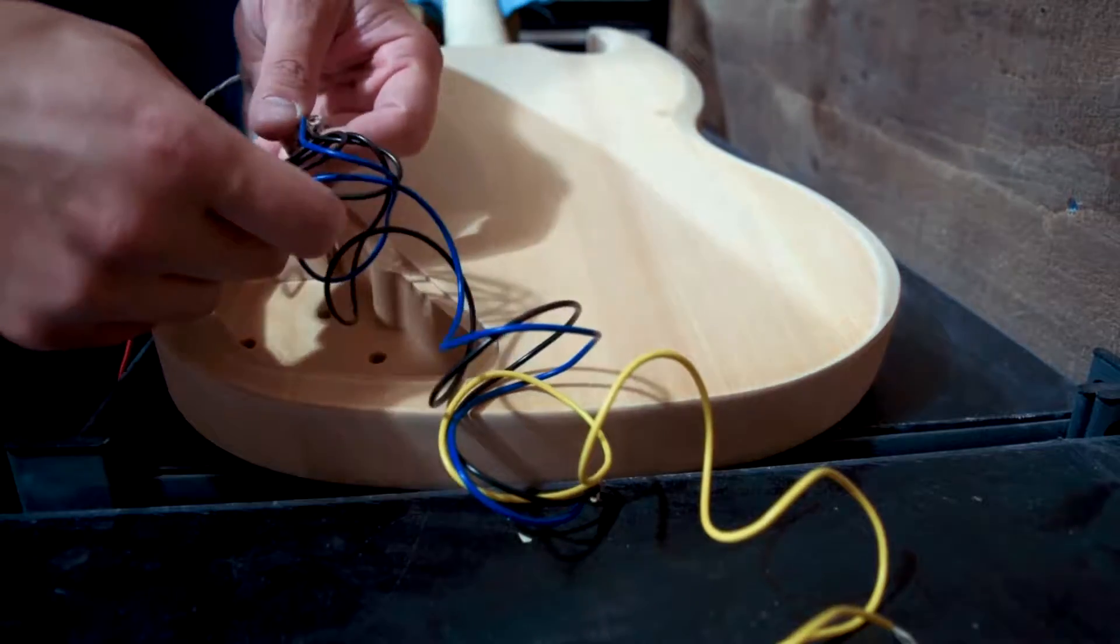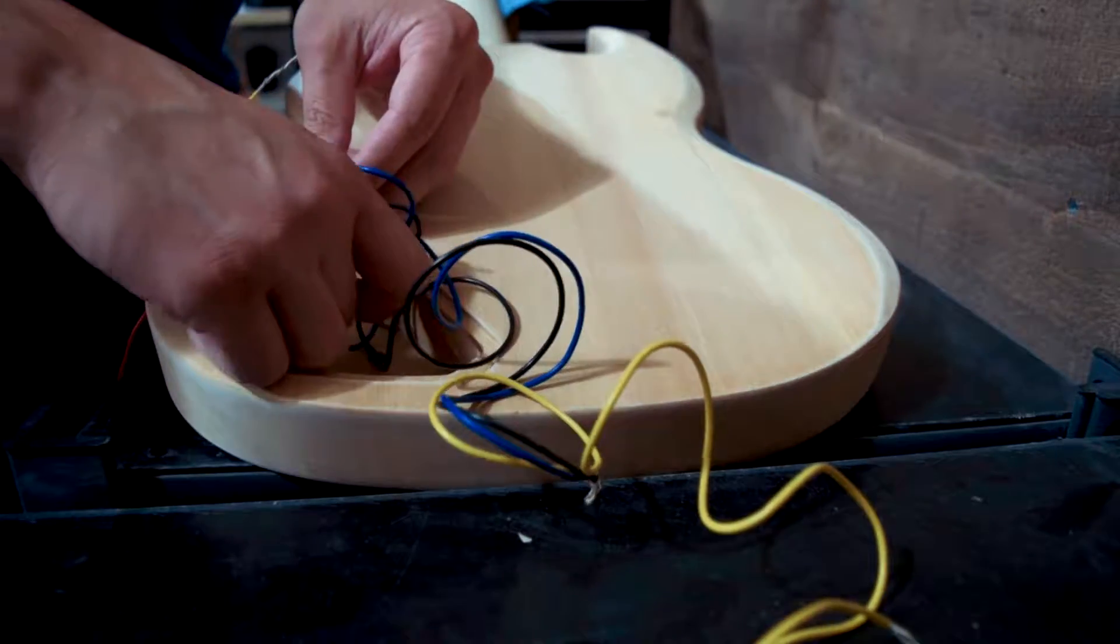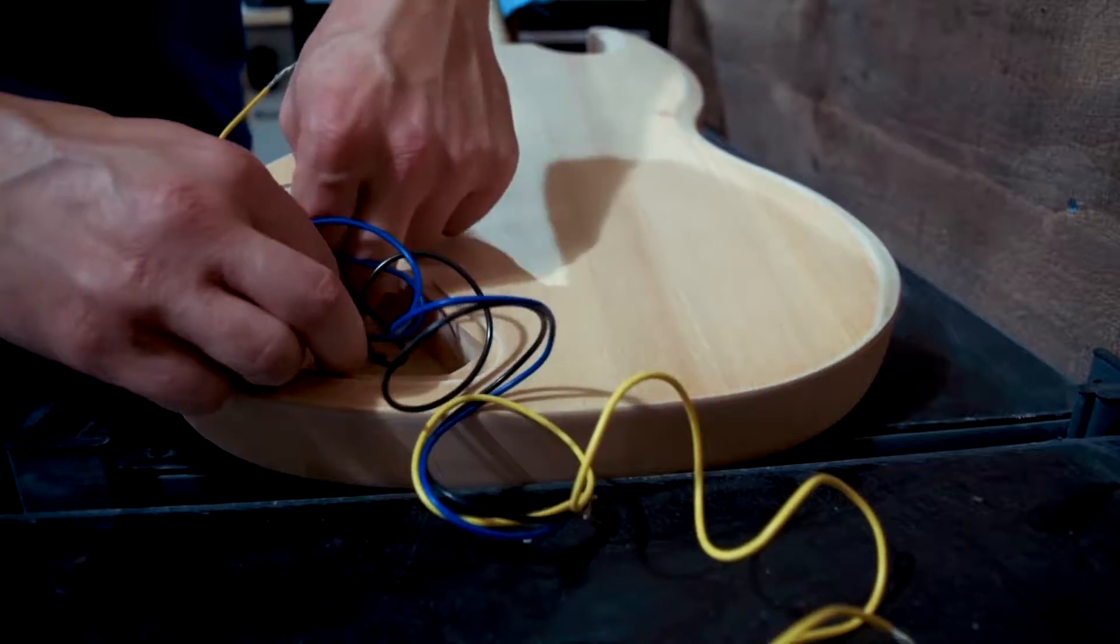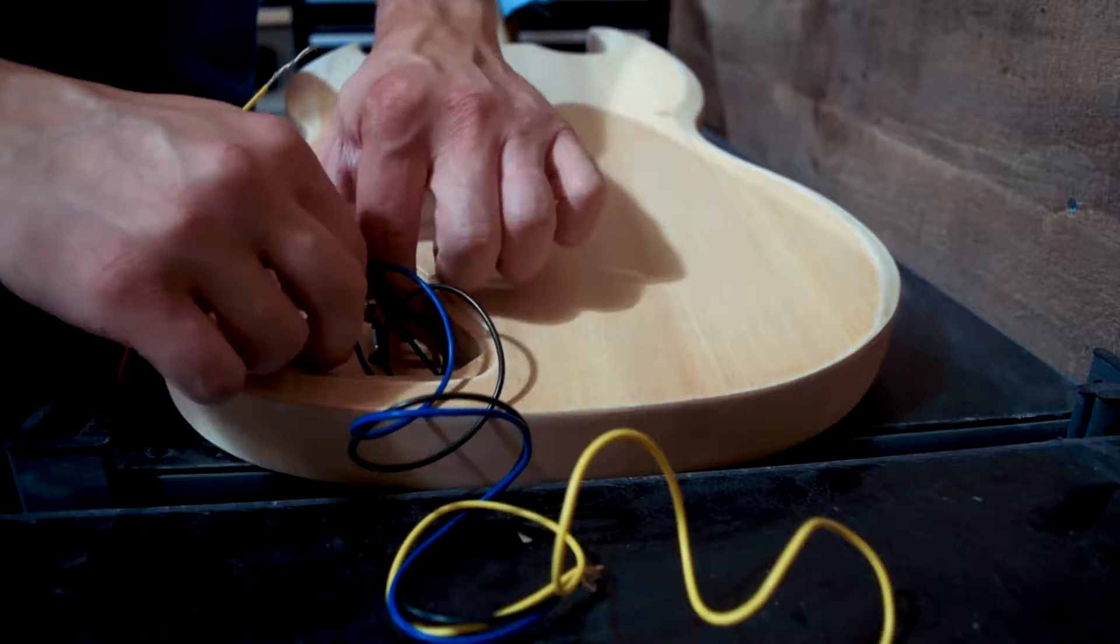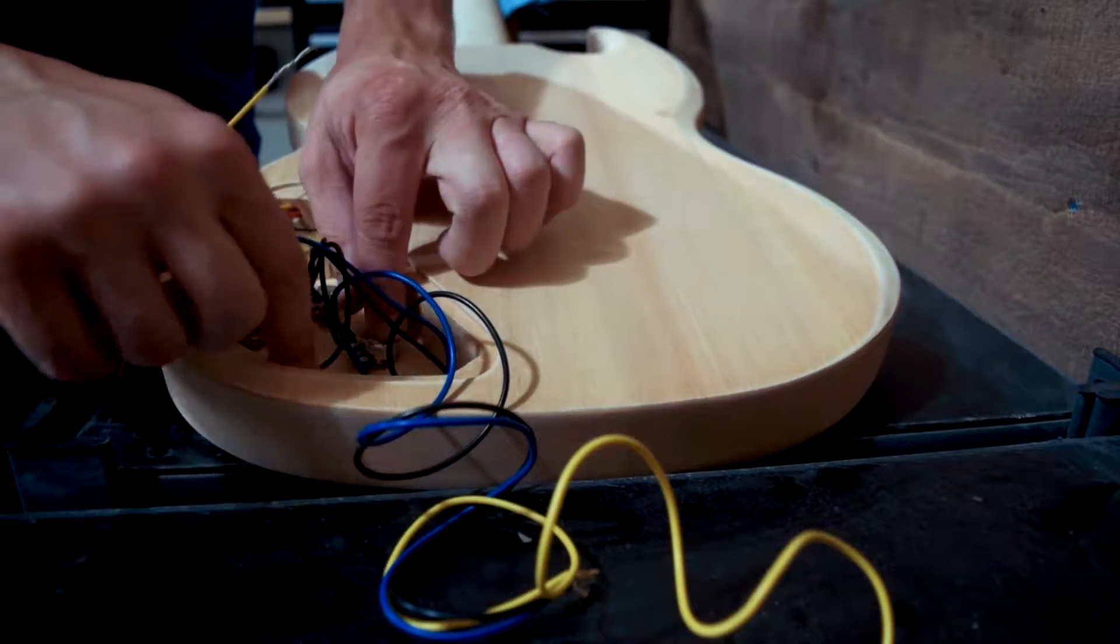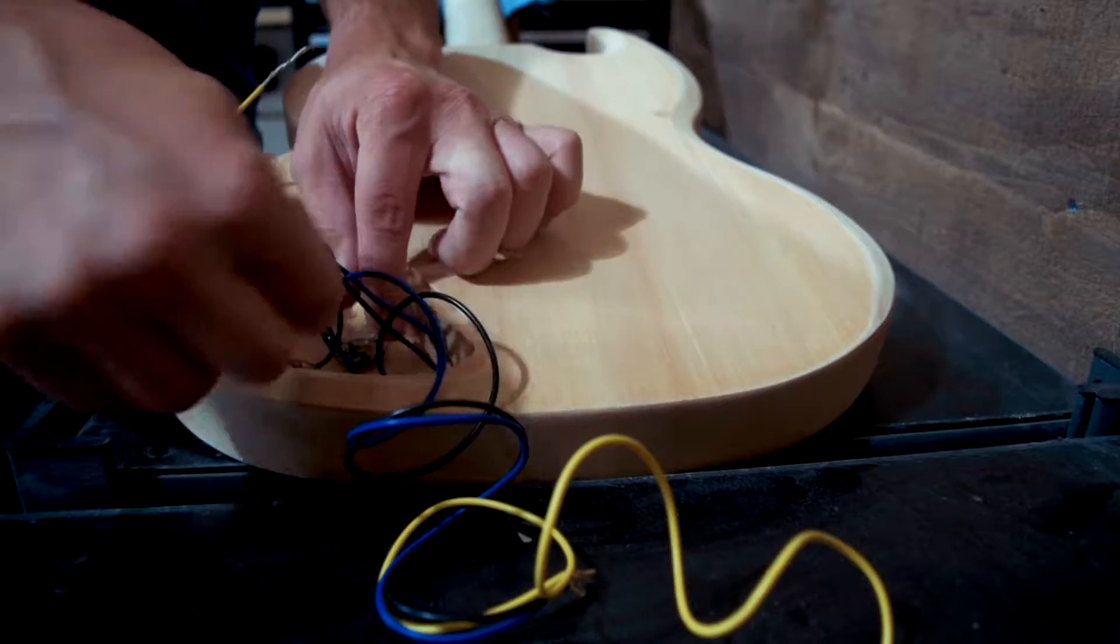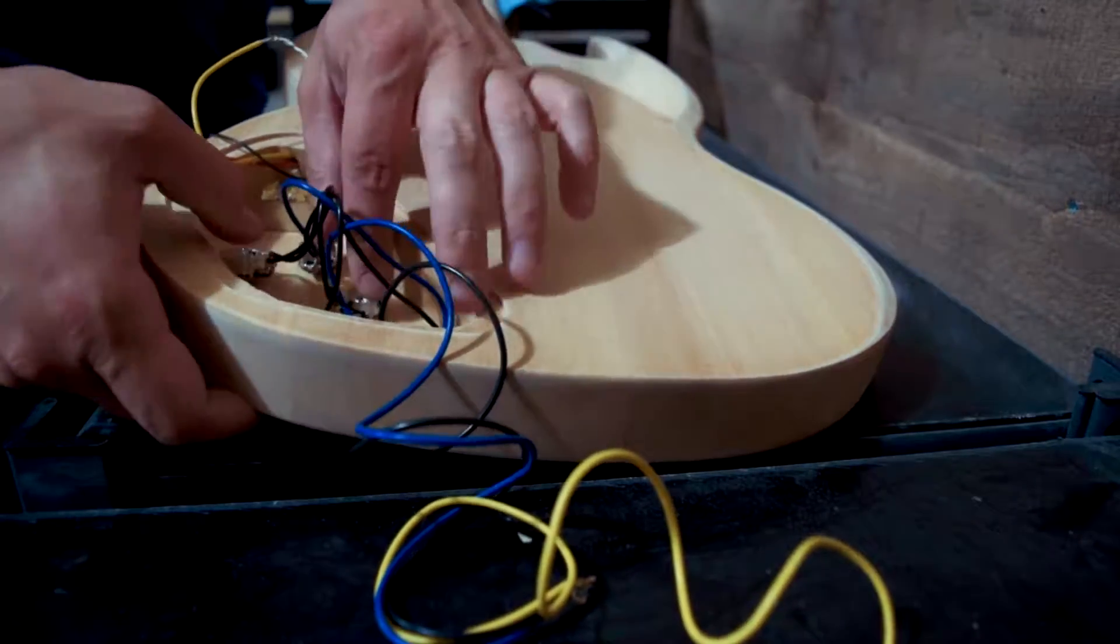You can also shield these pickup cavities beforehand if you're worried about noise. These kits do come with a substantial amount of extra wire so that you can trim them to the length that you so desire, or you can add other electronics and use the wire for that if you want.